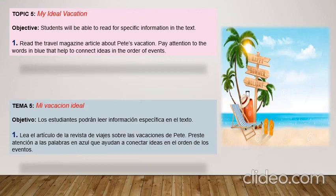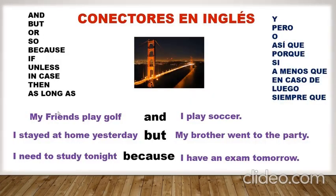Today we are going to learn about connectors. En esta clase vamos a hablar sobre los conectores. ¿Pero qué son los conectores? Aquí te voy a explicar. Los conectores son palabras o conjunto de palabras que se usa para unir frases u oraciones. La función de estas palabras es que al usarlas de manera correcta nos ayudan a organizar mejor lo que decimos y lo que escribimos en inglés. Ejemplo de conectores en español.